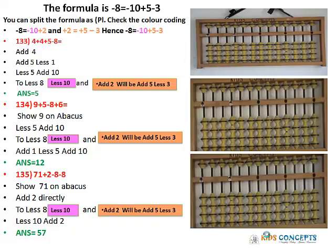Less 9 formula has already been explained to you. Similarly, we will explain the Less 8 formula. The formula for Less 8 is: Less 10 and Add 2. Sometimes you cannot add 2 directly, so you have to use the small system formula for Add 2, which is Add 5, Less 3. The total combination formula for Less 8 will be: Less 10, Add 5, Less 3. Let's try some problems for this.